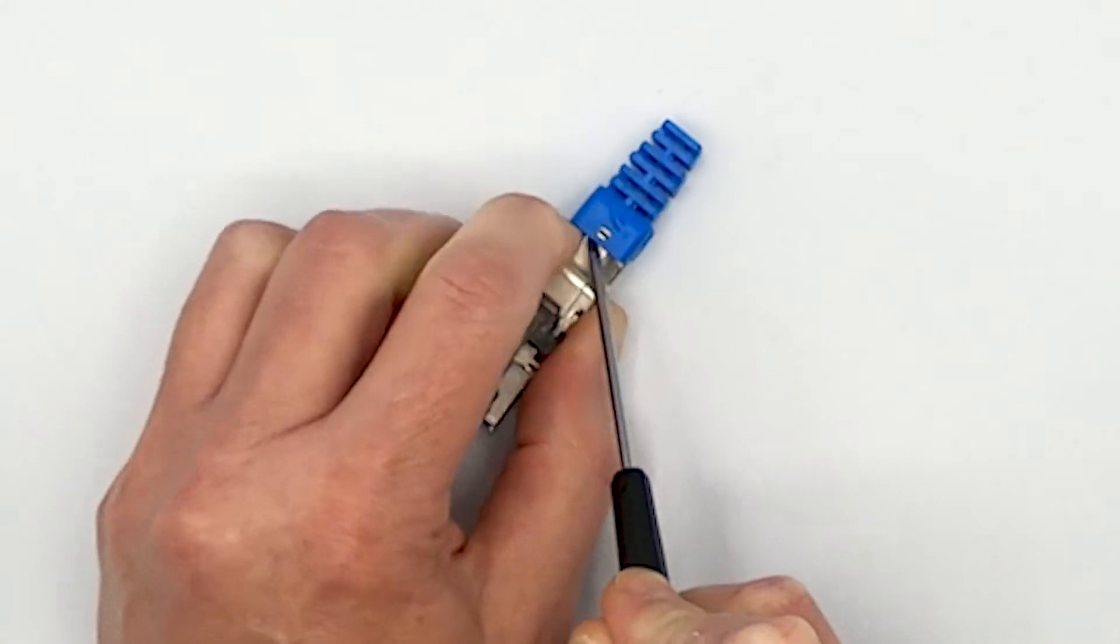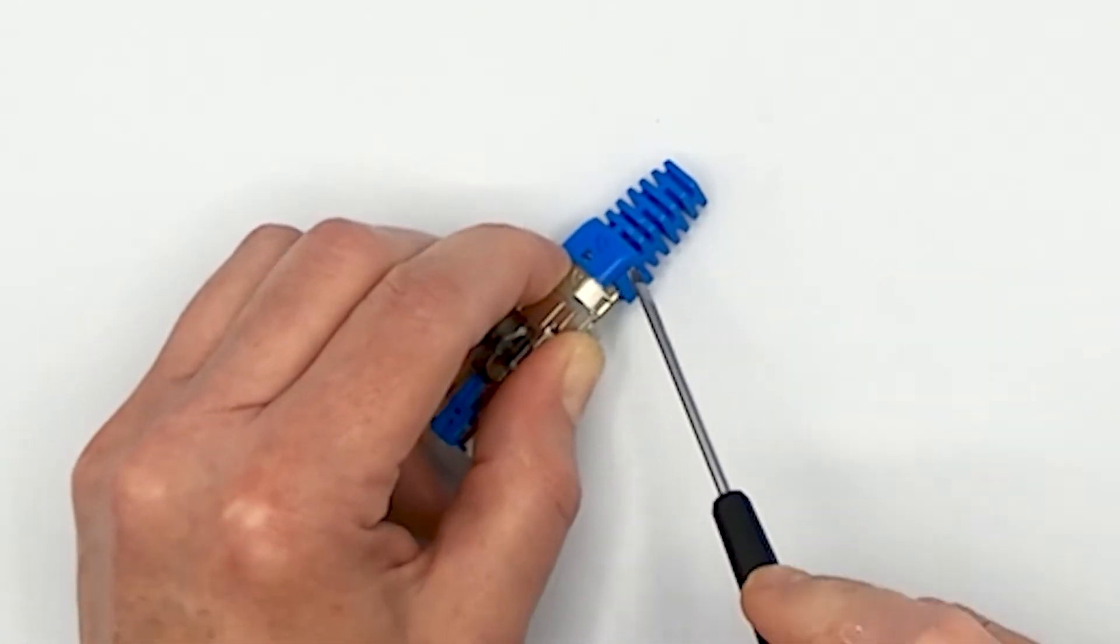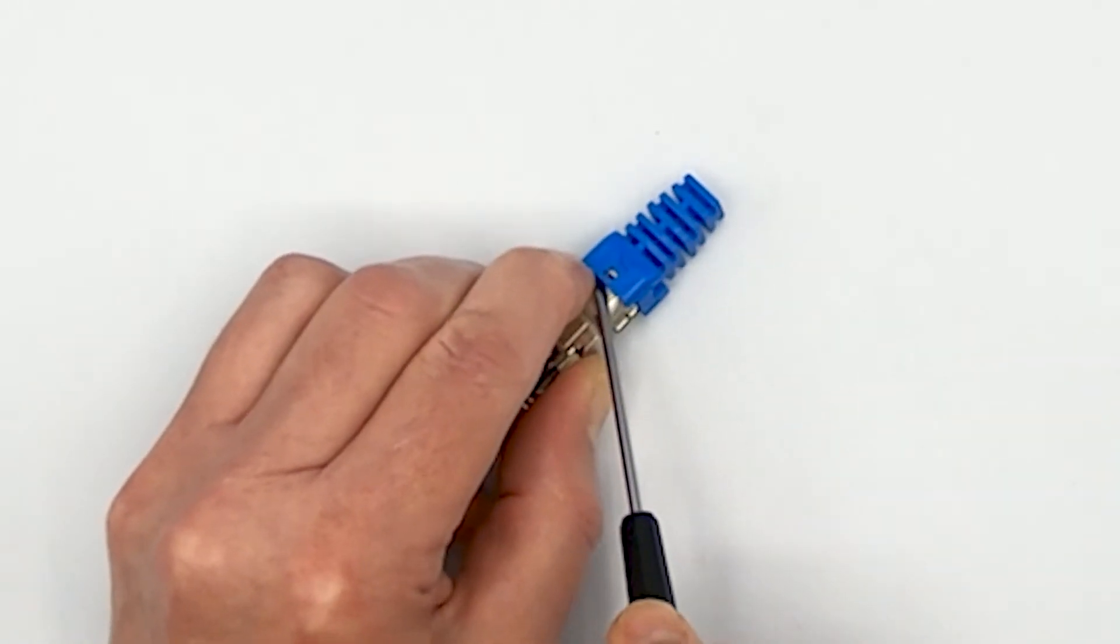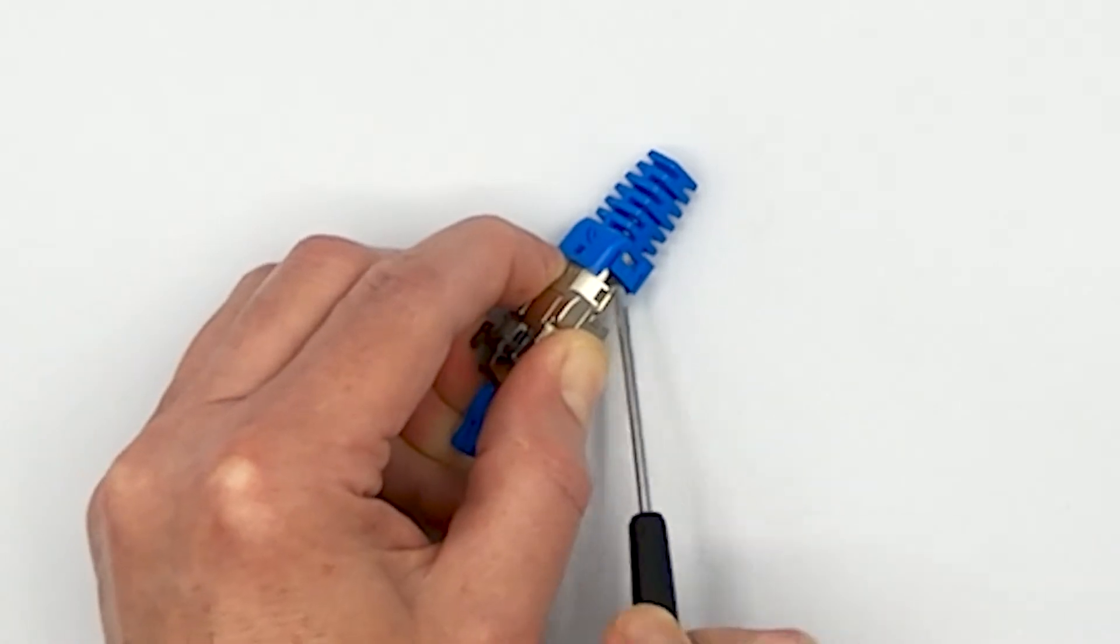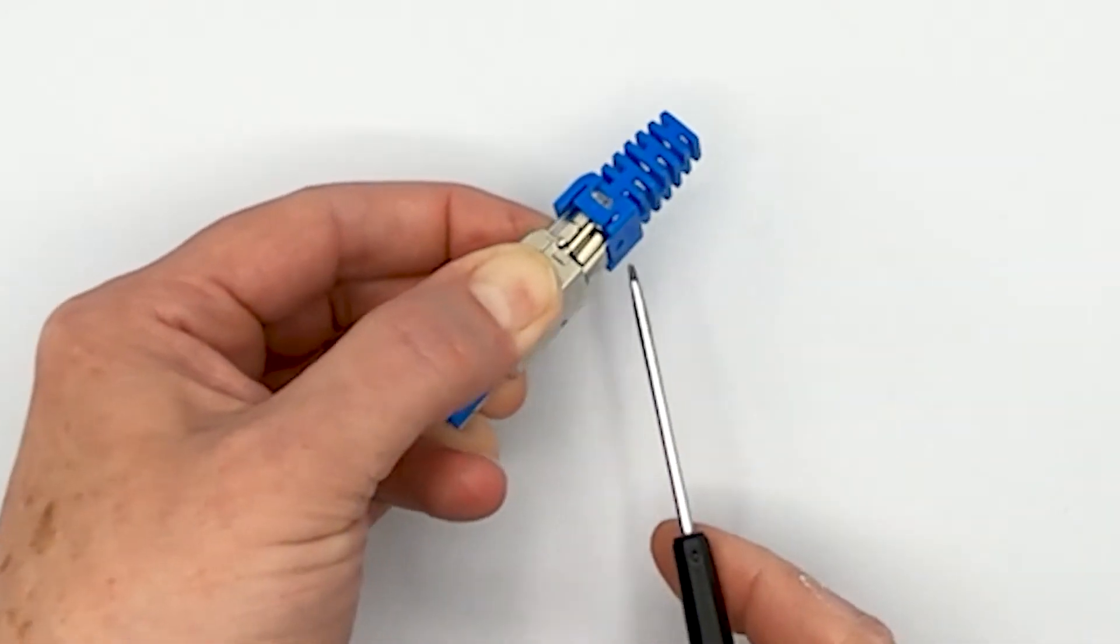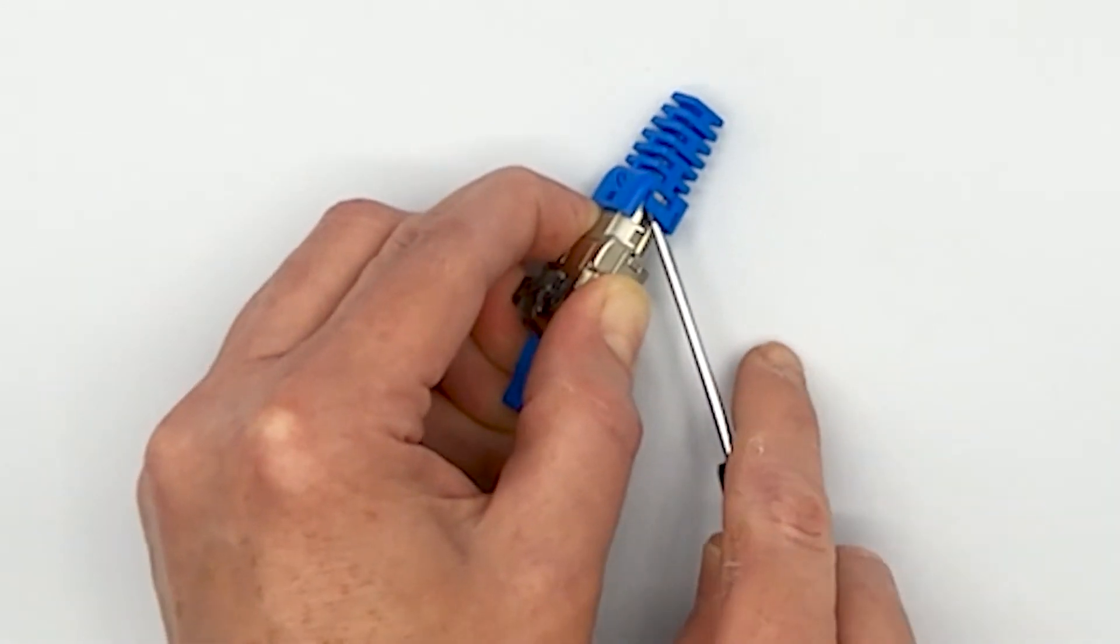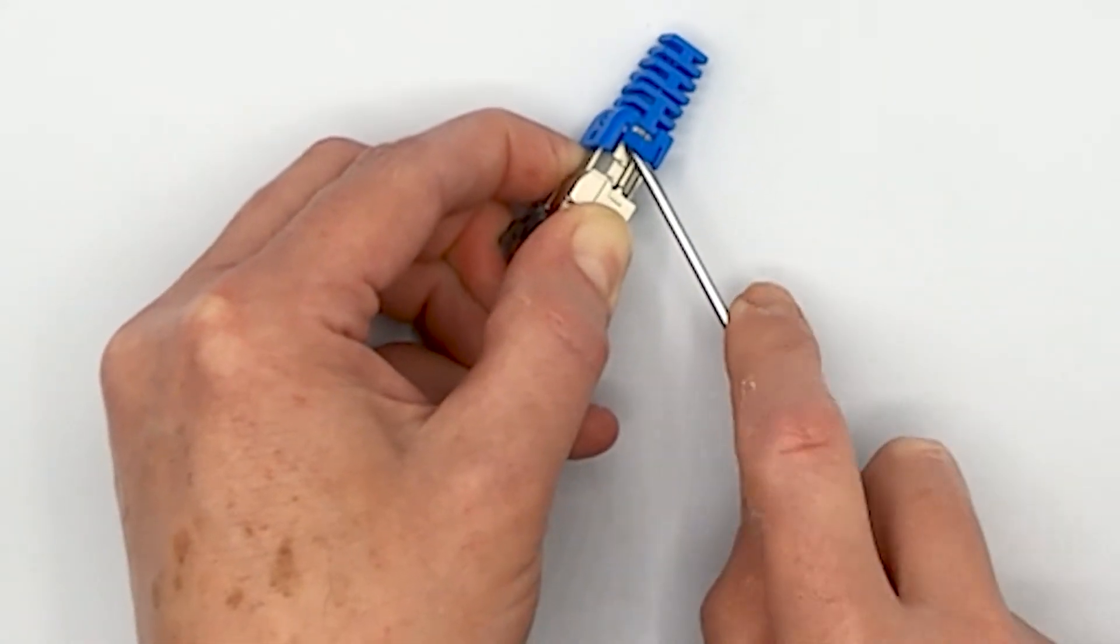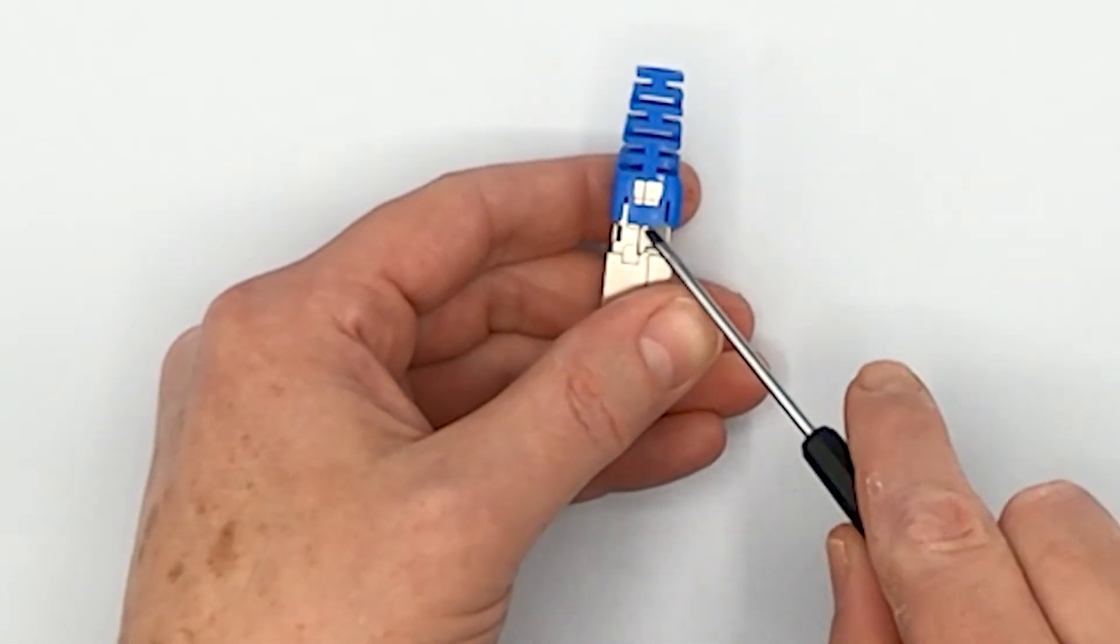Now it's going to have a propensity to want to snap right back on. So once you get one undone, you're going to need to use a little bit of finger pressure and keep it up so it doesn't re-snap on you. And then you need to go at it from the other sides at the same time and try to get them all unlatched so that you can pull it off without it re-latching on you. And that is not an easy task.